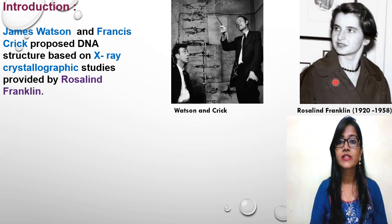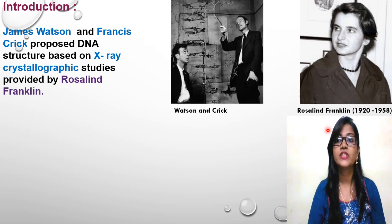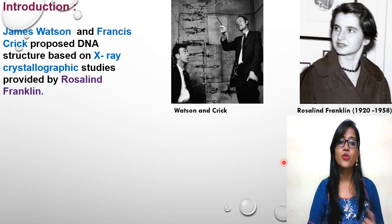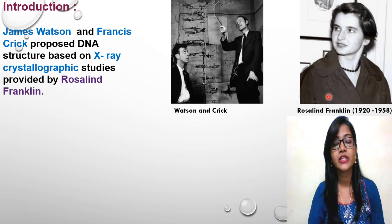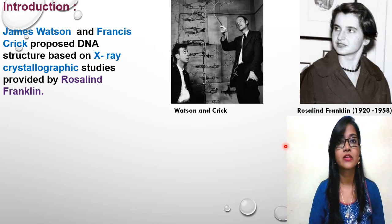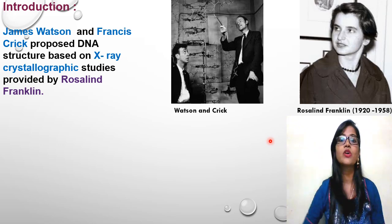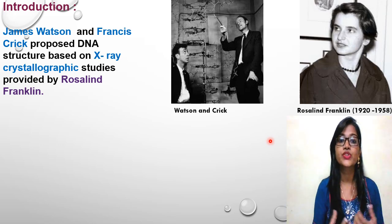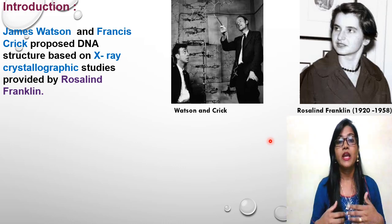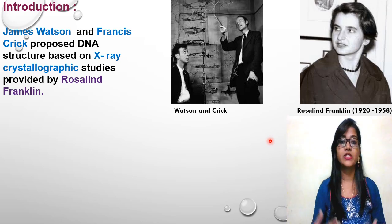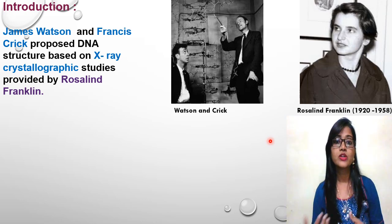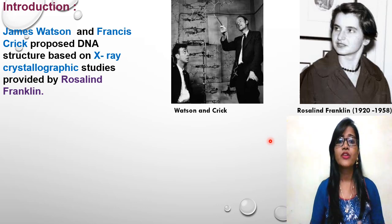Another scientist is Rosalind Franklin, also known as the dark lady of DNA. She was born in 1920 and died at the age of 37 due to ovarian cancer. She was an English chemist and X-ray crystallographer whose work was central to understanding the molecular structures of DNA, RNA, viruses, coal, and graphite. Although her work on coal and viruses was appreciated in her lifetime, her contributions to the discovery of DNA structure were largely recognized later on.